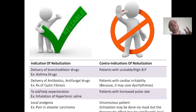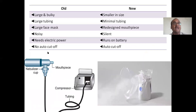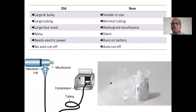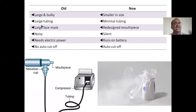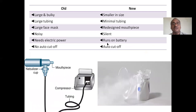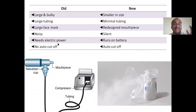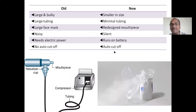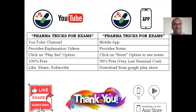Old nebulizers were very large and bulky with large tubings and large face masks. New nebulizers are smart, smaller in size, minimal tubing, no large face mask, silent, and can run on battery as well as electric power, with auto cutoff features also available. These points are more than enough for your regular examination — enjoy your pharmacy studies!